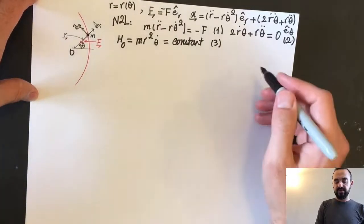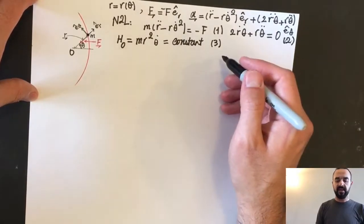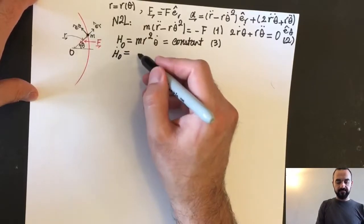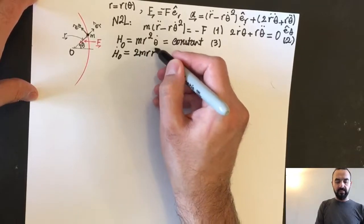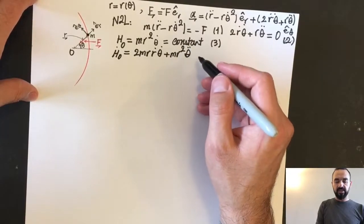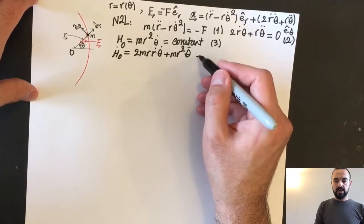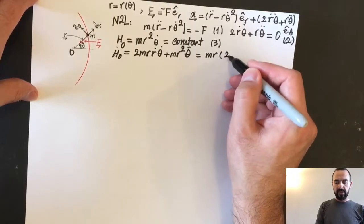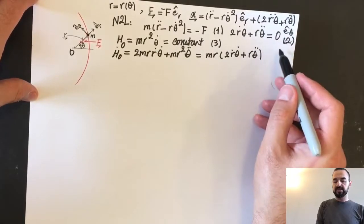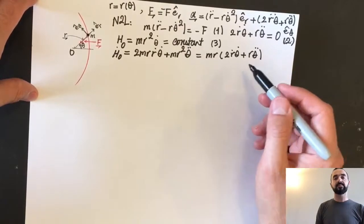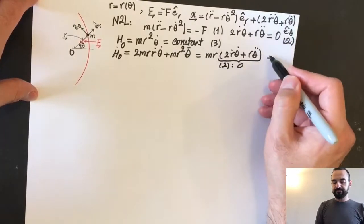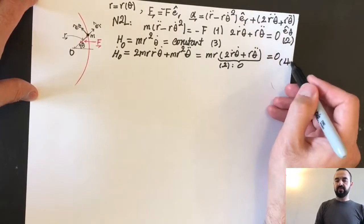If you differentiate this definition of angular momentum using the product rule, you get H_O-dot equals 2M R-dot theta-dot plus M R-squared theta-double-dot, which simplifies to M R times (2 R-dot theta-dot plus R theta-double-dot). From equation 2, we know that 2 R-dot theta-dot plus R theta-double-dot equals zero, so the whole expression equals zero — call this equation 4.